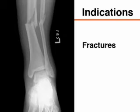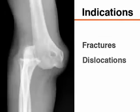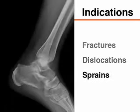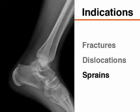Fractures: Splinting is used to stabilize fractures of the upper and lower extremity, providing patient comfort and maintaining proper bone alignment. Dislocations: After reduction of a dislocated joint, splinting is used to maintain anatomic reduction during healing. Sprains: Splinting may be used to maintain the position of function and to alleviate pain for patients with ligamentous sprains.